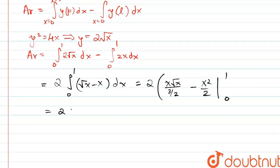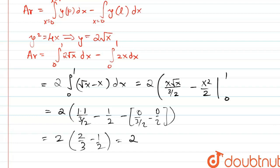This will be equal to 2 times [1√1/(3/2) - 1/2] minus [0/(3/2) - 0/2]. This entire thing will be 0. This gives us 2 times (2/3 - 1/2), which is equal to 2 times 1/6, which is equal to 1/3.